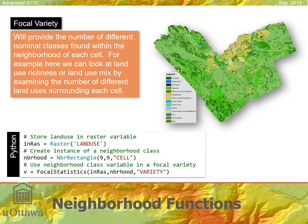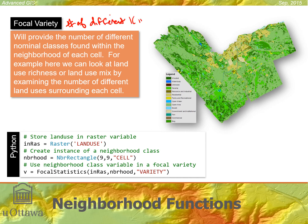Here's a categorical example using focal variety. Variety measures the number of different kinds of things within the neighborhood and assigns that count to the focal cell.